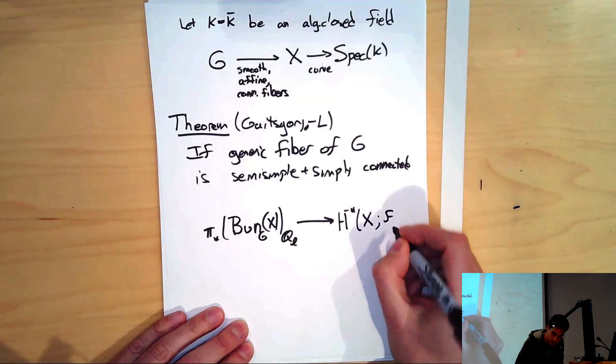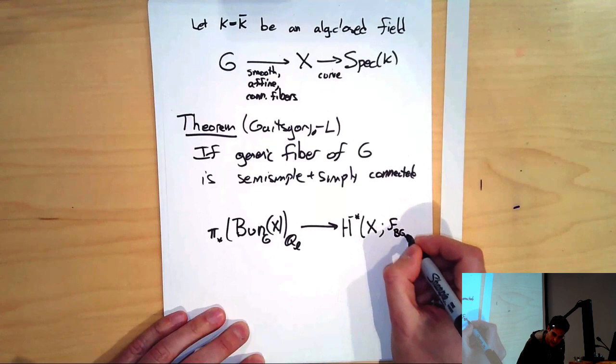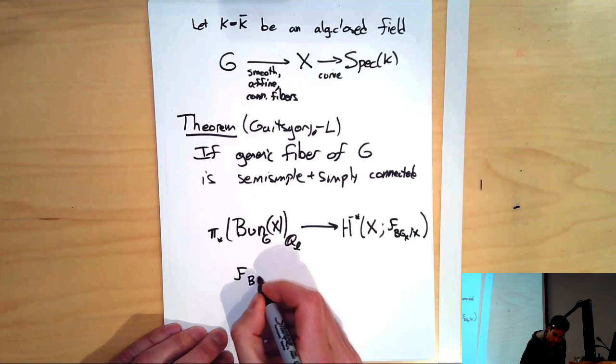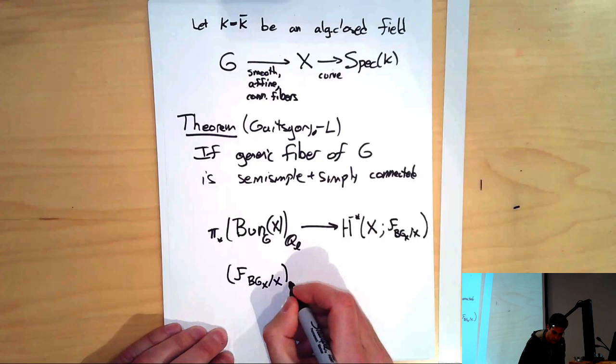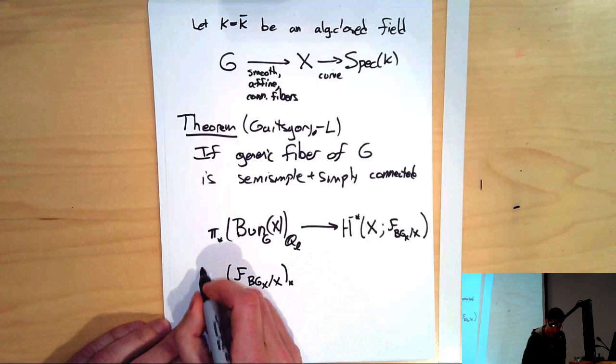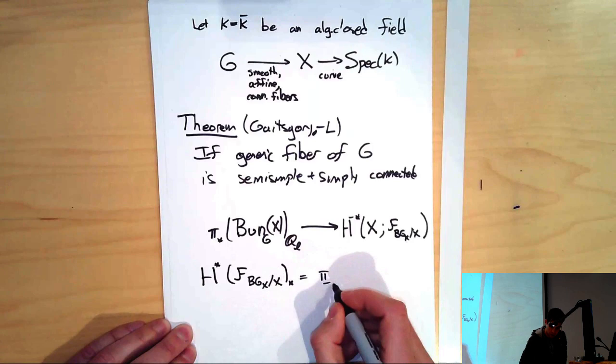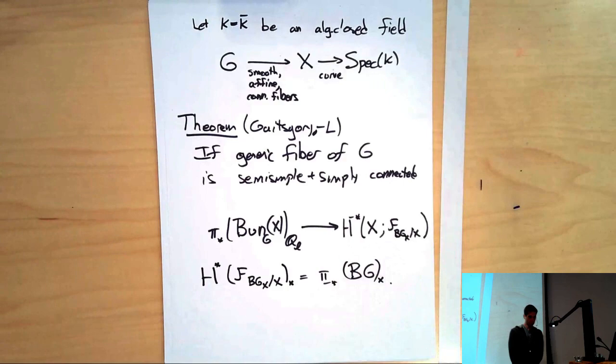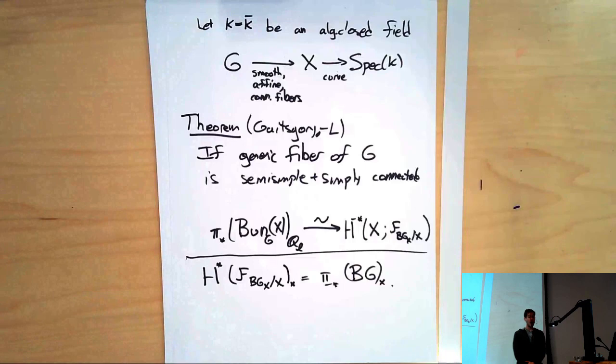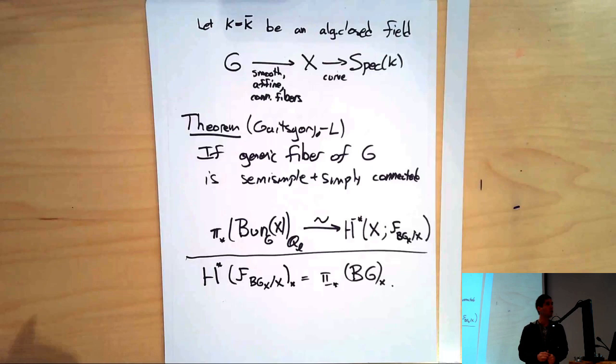The cohomology of X with coefficients in some sheaves that I called F of BG over X. What is this sheaf? I didn't tell you how to define it, but I told you the essential property it has: if you take its stalk at any point x, you get a complex whose cohomologies are the homotopy groups of the fiber of BG at that same point. The theorem is that there's a natural map that's an isomorphism. This is a reminder of what F looks like.